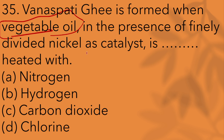Nickel is used as a catalyst — nickel catalysts. The options for the gas involved are nitrogen, carbon dioxide, chlorine, and hydrogen. Hydrogen is used in the hydrogenation of vegetable oil with a nickel catalyst.